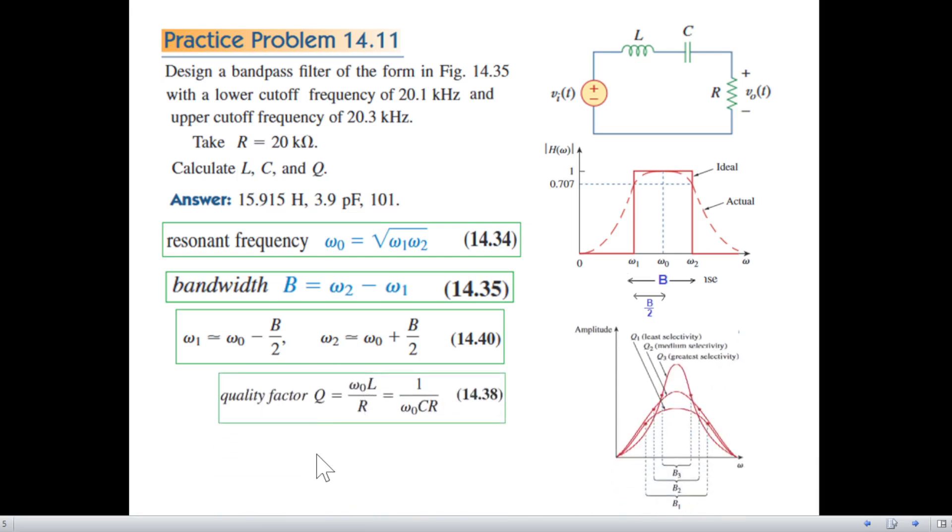And also there is a term called quality factor Q. This formula is used for quality: omega naught L over R, also 1 over omega naught CR. And what is quality factor? It actually shows how selective is the filter, how sharp is the filter.